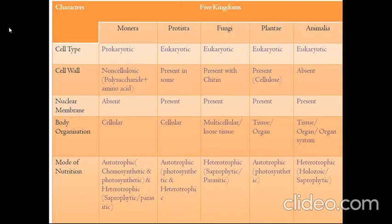Let's see how the five kingdoms are classified. First, cell type. Monera falls under prokaryotes, while Protista, Fungi, Plantae, and Animalia are eukaryotic.